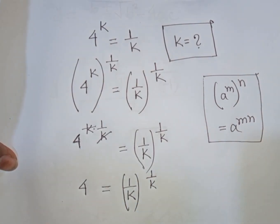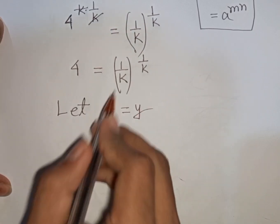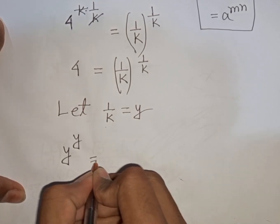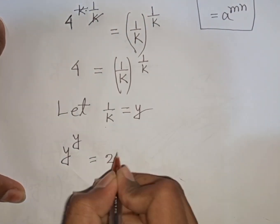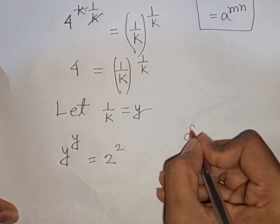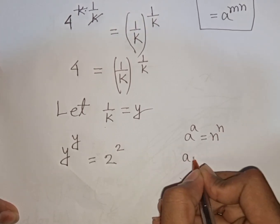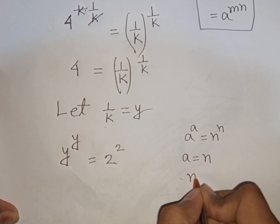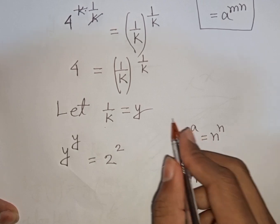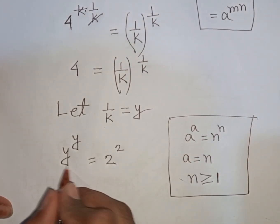Let 1/k be substituted by y. So our equation becomes y^y = 4, which is the same as 2². Applying the rule a^a = n^n means a = n. So by comparing, y = 2.